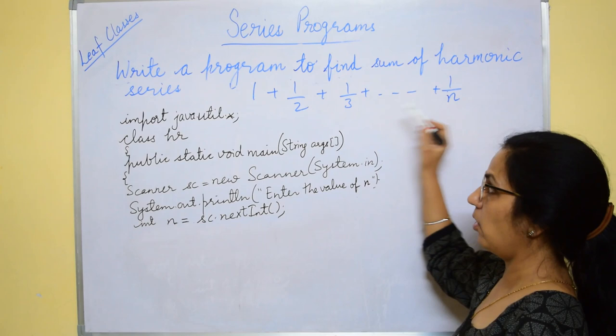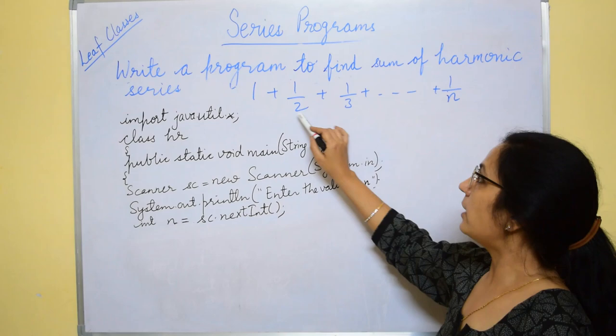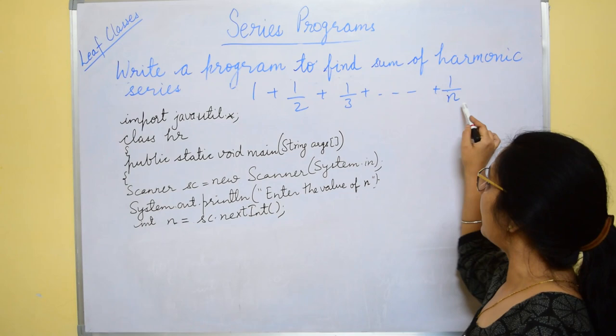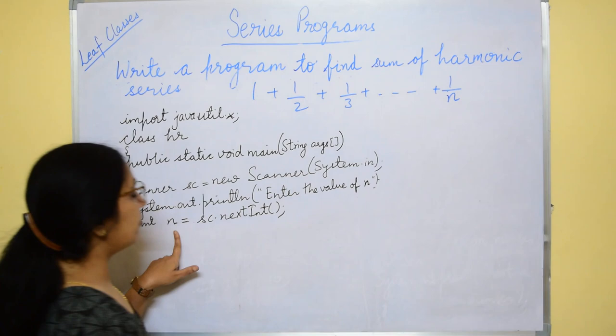Although in first it is not written by 1 but that is understood. So 1, 2, 3, 4 up to n. It is increasing from 1 till n with a step of 1. So the last term value n will input from the user.